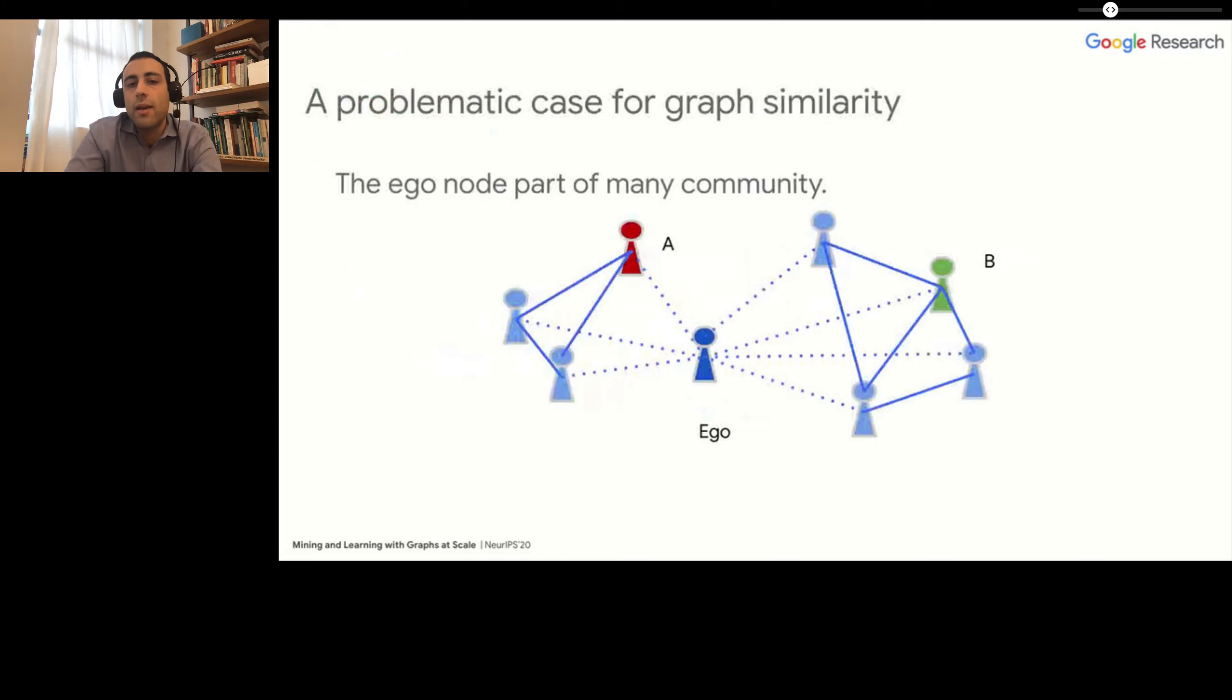Now this, however, can be problematic. I'm showing you in the slide one example where common neighbors can be misleading. Suppose that we count the number of common neighbors between node A and node B. We will see that these two nodes are connected by a common neighbor, which is the ego node at the center of the graph. If you look at this node at the center, which we call the ego, you will see that the ego network of this node contains two very well-separated communities, one in which A belongs and the other one to which B belongs.